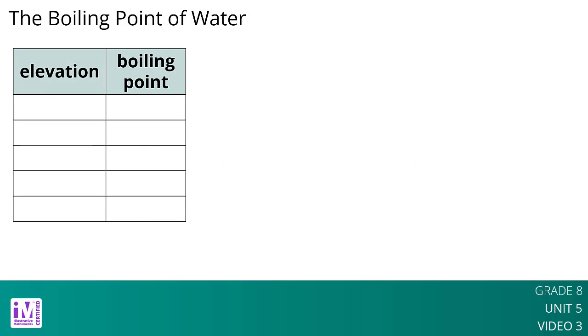Water has different boiling points at different elevations. At 0 meters above sea level, the boiling point is 100 degrees Celsius. At 2,500 meters above sea level, the boiling point is 91.3 degrees Celsius.